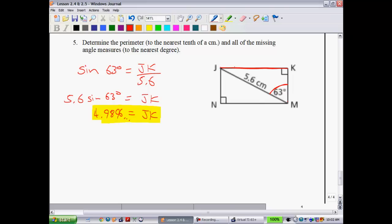Now let's find K, M. So I'll just kind of highlight this side. We have that angle again. This time, of course, this is your adjacent side. So we're going to have to use a different ratio. The cosine of 63 degrees is equal to your adjacent, or K, M, over 5.6. So 5.6 cosine of 63 degrees is equal to K, M.